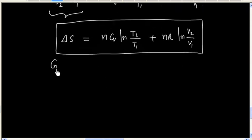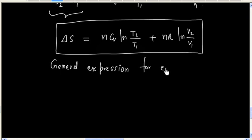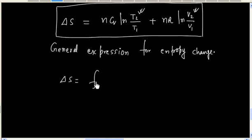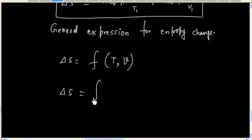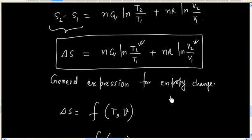So we can write: delta S equals NcV ln(T2/T1) plus NR ln(V2/V1). This is the general expression for entropy change, given in terms of two variables — temperature and volume. So we have delta S as a function of temperature and volume. We can also calculate delta S as a function of temperature and pressure, which we will do in a separate exercise. For the time being, we have derived the expression for total entropy change in terms of temperature and volume.